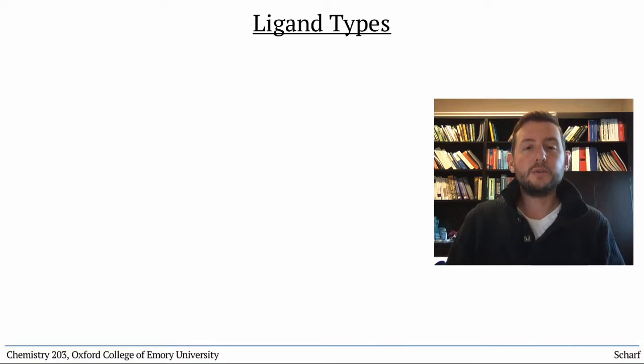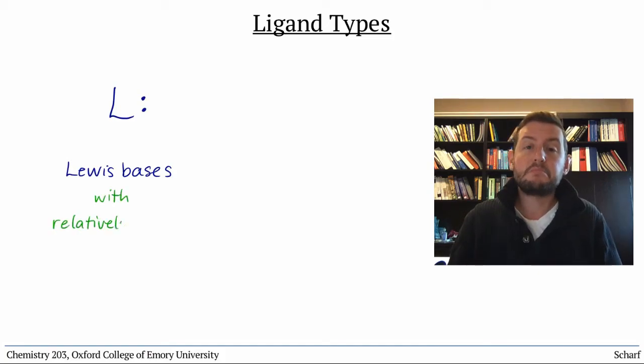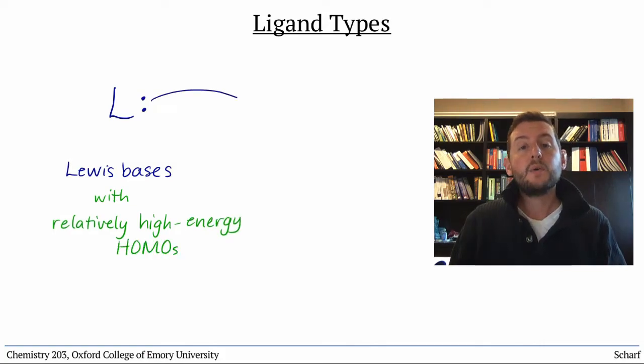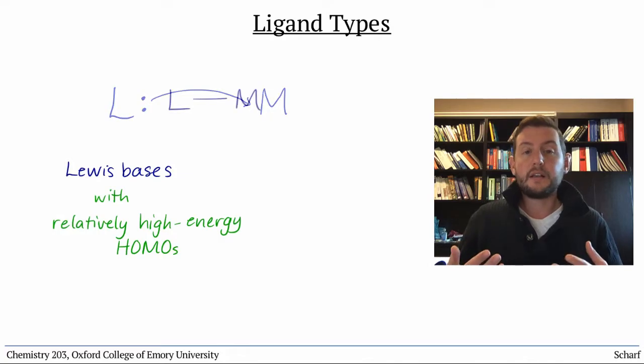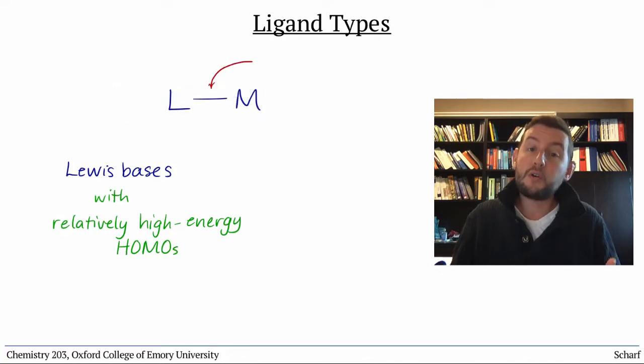In the last video, we saw that Lewis bases, called ligands, can bind to Lewis acidic transition metal ions. These ligands all have pairs of electrons that can be shared. They all have reasonably high energy HOMOs. That's what makes them Lewis bases. When they're bound to the metal, they share their electrons in polar covalent bonds.